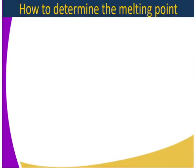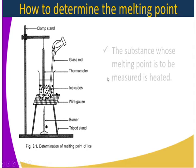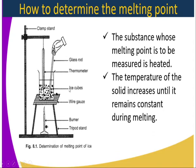How do we determine the melting point? Let's consider ice or water. Using the setup as illustrated, ice cubes are placed in a beaker with a thermometer dipped in, and we heat using a Bunsen burner as shown in the diagram. The substance whose melting point is to be measured is placed in the same setup, and the temperature of the solid increases until it remains constant during melting.